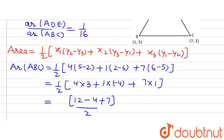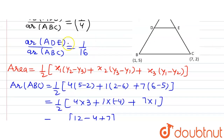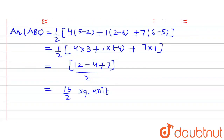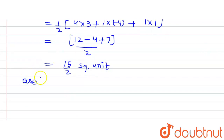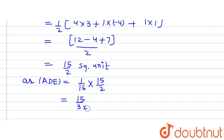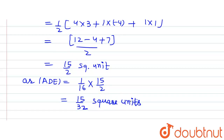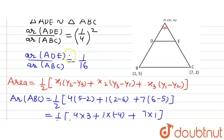Now, we were asked to find the area of triangle ADE. We know that area ADE divided by area ABC equals 1/16. So area ADE = (1/16) × (15/2) = 15/32 square units. The area of triangle ADE is 15/32 square units, and the ratio of area ADE to area ABC is 1/16.